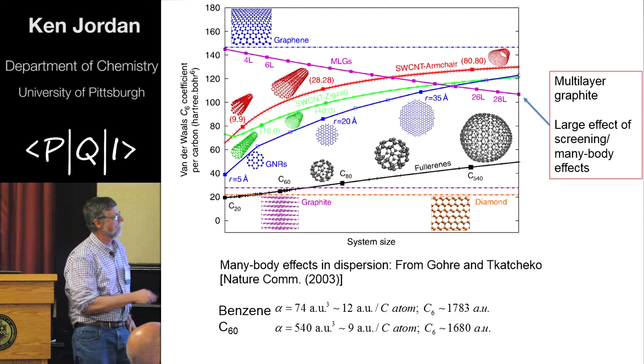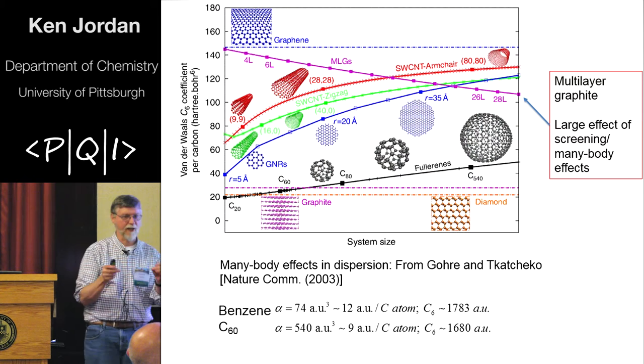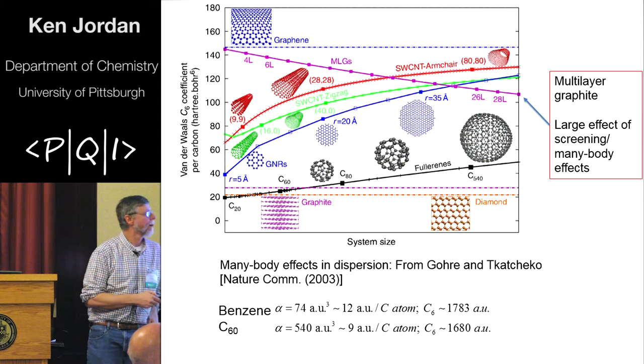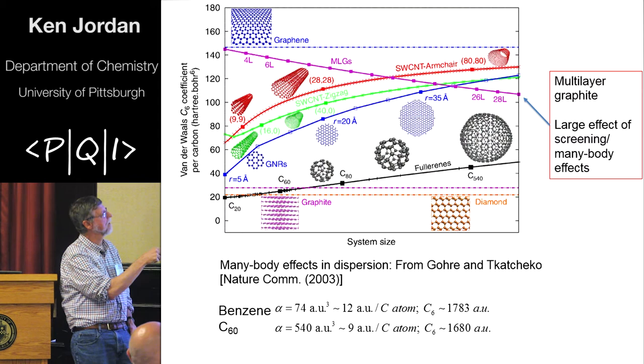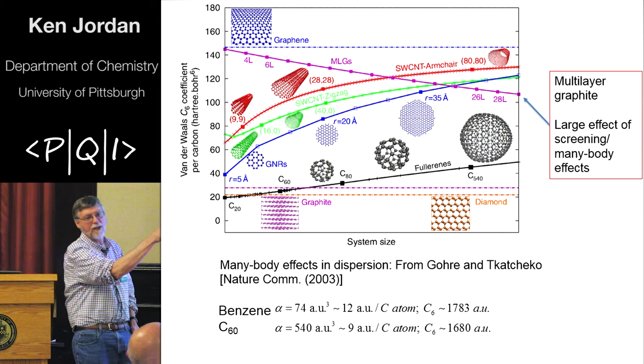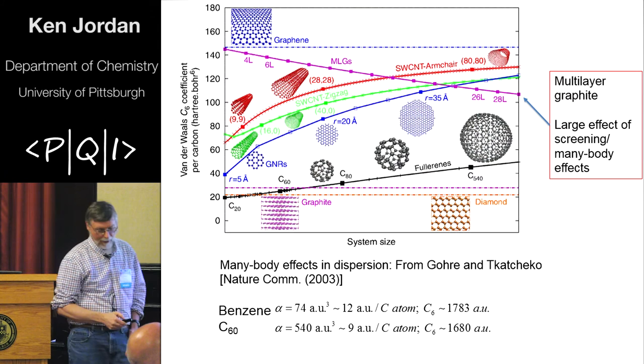And I think I'll just end with something that we're very interested in. I took this from a paper from Tkatchenko. This is showing the Van der Waals coefficient per carbon atom for a bunch of carbon materials. And it's showing that as a function of system size. So here's your fullerene down here. So C20, so the total Van der Waals coefficient would be 20 times this. You can see how this is changing. Up here is graphene, just fundamentally different. And this is different multiple layers of graphene. And you can see that's changing.